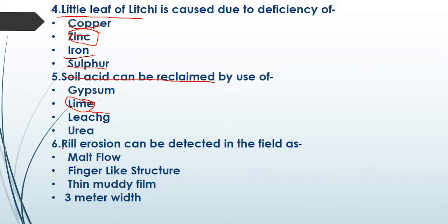The sixth question is: rill erosion can be detected in the field as? How will we recognize rill erosion in the field? The first option is mild flow, second is finger-like structure, third is thin muddy film, and fourth is 3-meter width. The right answer is the second option — finger-like structures are formed in areas affected by rill erosion, and we can recognize them easily.